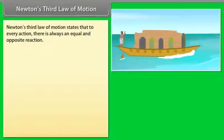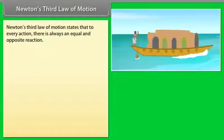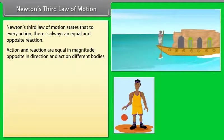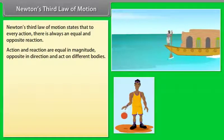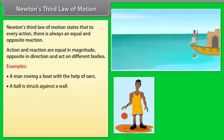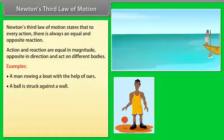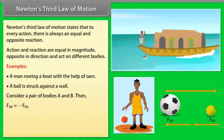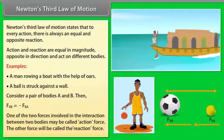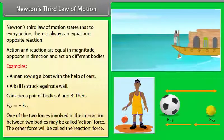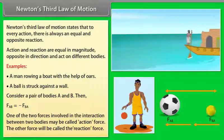Newton's third law of motion states that to every action there is always an equal and opposite reaction. Action and reaction are equal in magnitude, opposite in direction, and act on different bodies. A man rowing a boat with oars and a ball bouncing on the ground are examples of Newton's third law. For a pair of bodies A and B: FAB = -FBA. One of the two forces may be called the action force, and the other will be called the reaction force.